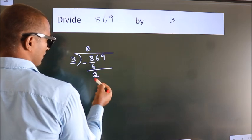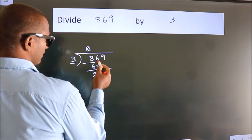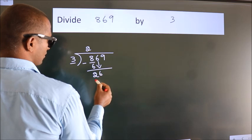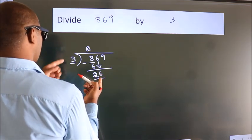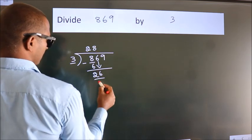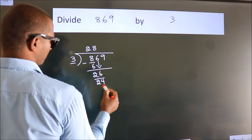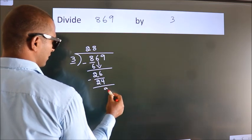We get 2. After this, bring down the beside number. So 6 down, so 26. A number close to 26 in 3 table is 3 8s, 24. Now we subtract. We get 2.